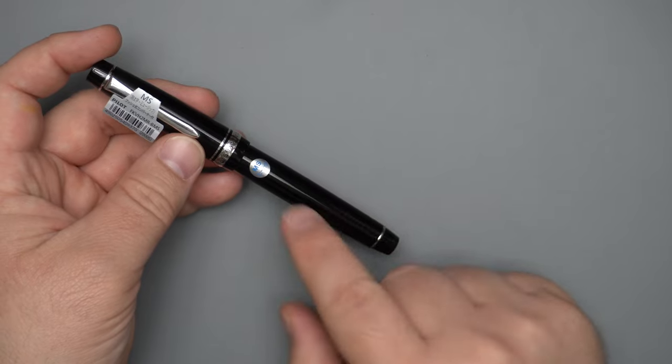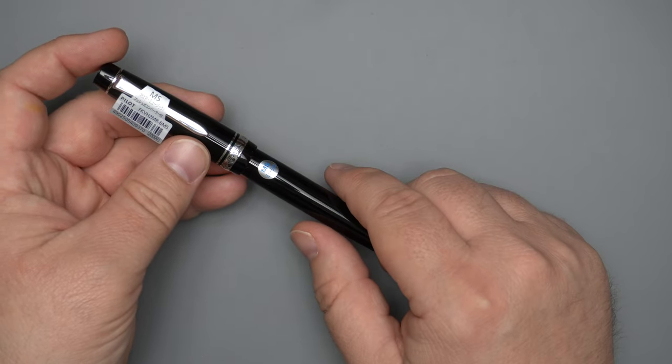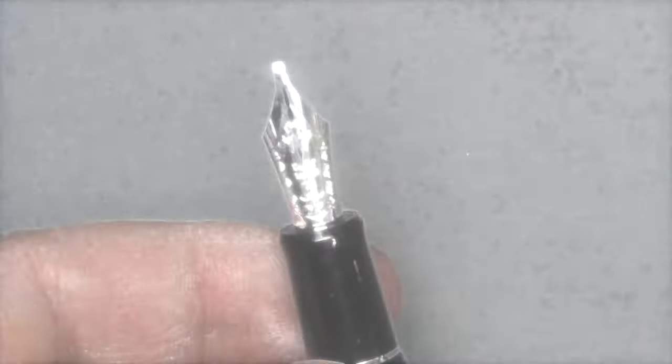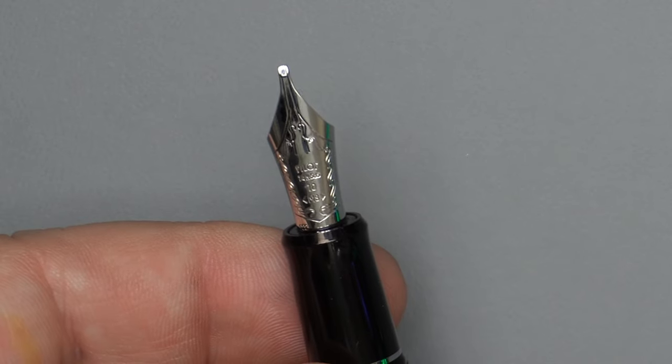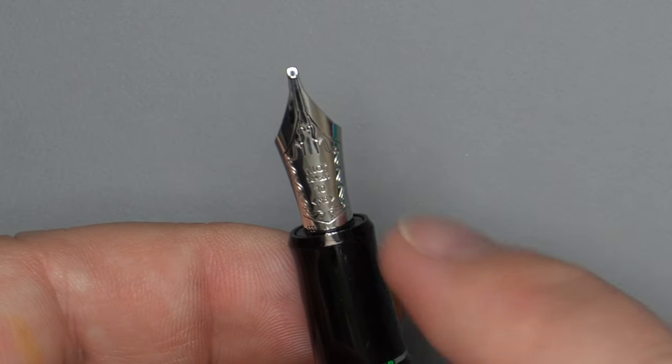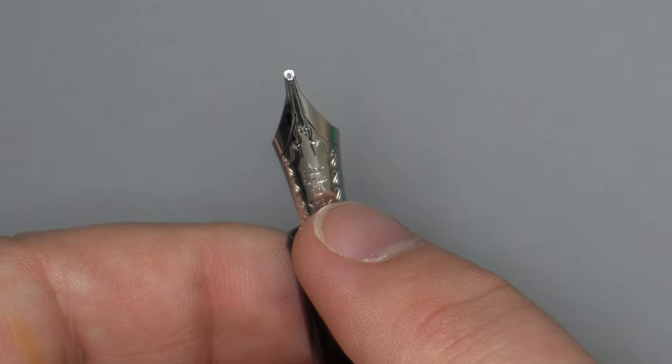In this video, we are focusing on the music nib. So let's take a look at this nib close up. So here we have the music nib for the Custom Heritage 912, which is a number 10 size nib. That's what this 10 means.